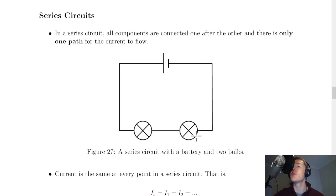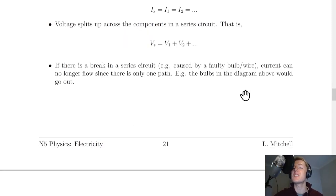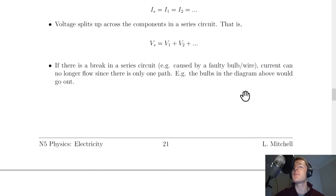Fairy lights and Christmas tree lights are typically connected in series, which is a disadvantage because if one light goes out, they all go out. Advantages of series circuits, however, include that they are usually quite easy to build compared to parallel circuits, and they may sometimes be cheaper to build because they might have fewer components.